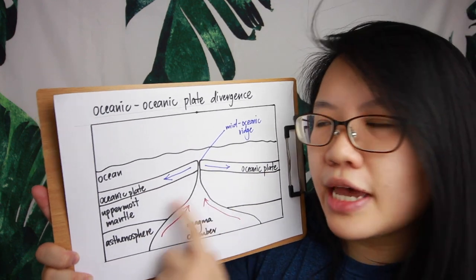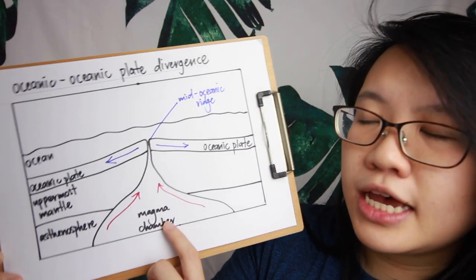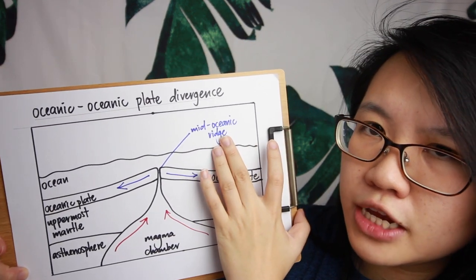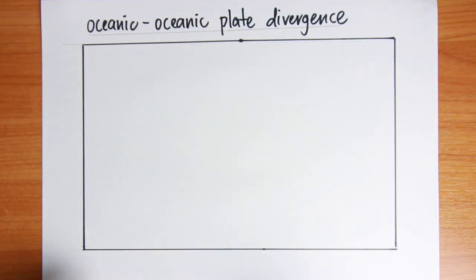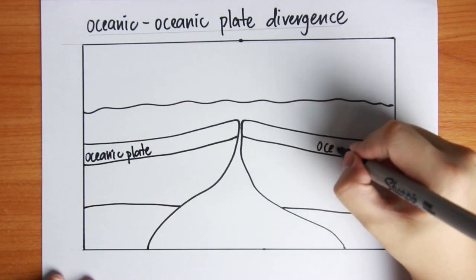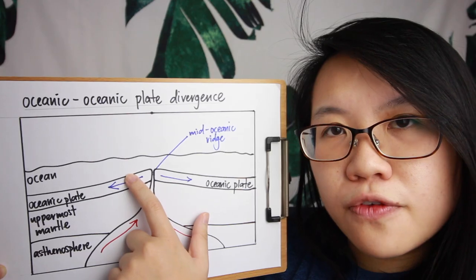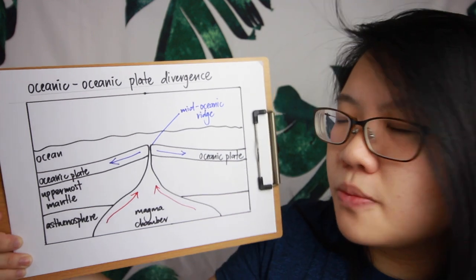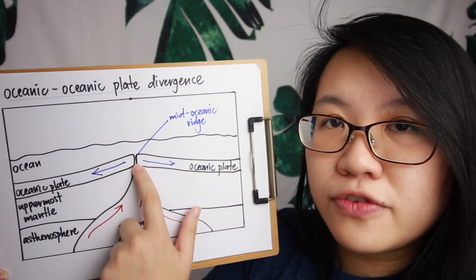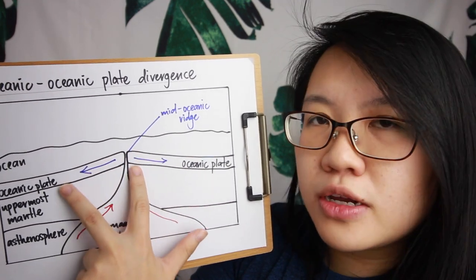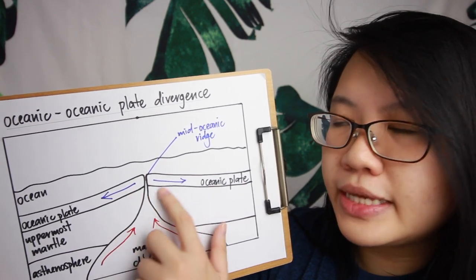Make sure that if the exam question specifies the plates involved, you put in the names of the relevant plates. Draw in the arrows to signify the movement of the plates — very important for divergent boundaries. The landform created here is the mid-oceanic ridge. When two oceanic plates diverge, tensional force is exerted, cracks and fissures appear, and magma rises through them, cooling and solidifying on the ocean floor. This process is known as seafloor spreading.